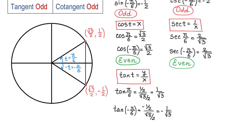So as you see here, when we change t with negative t, we get the negative of the value above. Then we can say that tangent is an odd function.